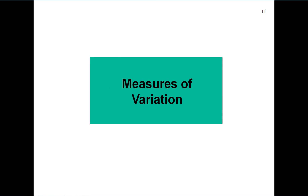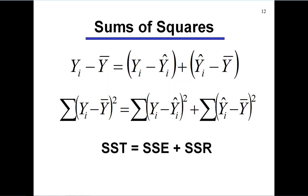I want to introduce the coefficient of determination, R squared. To compute it, we use the identity that yi minus y-bar equals (y-hat_i minus y-bar) plus (yi minus y-hat_i). Squaring both sides and summing, the cross-product term goes to zero, giving us the decomposition: sums of squares total equals sums of squares for regression plus sums of squares error.